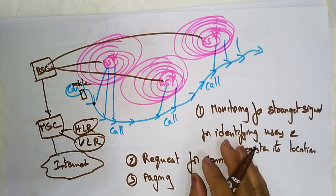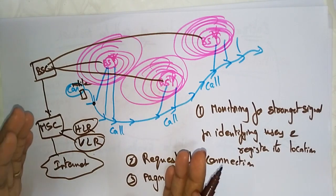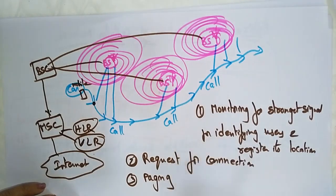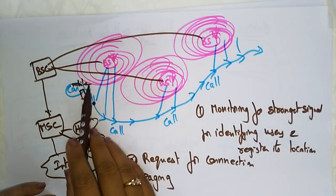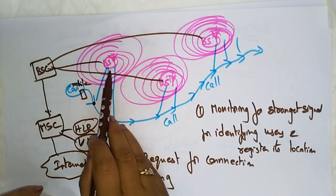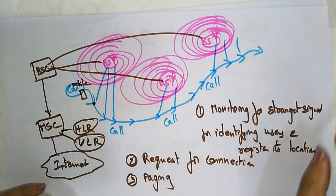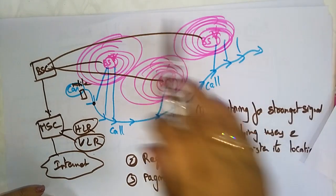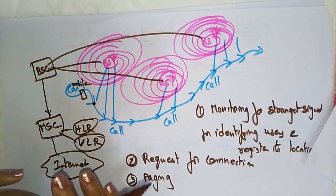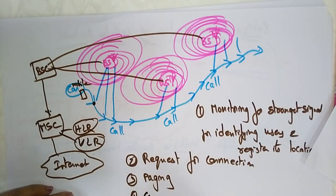The third step is paging. The Mobile Switching Center sends a paging message to certain base stations depending on the called mobile number. Each base station then transmits a paging signal on its own assigned setup channels, effectively locating the called mobile unit.